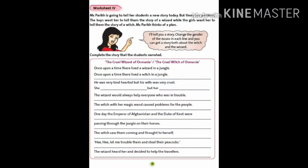Now, worksheet number 4, page 15. Miss Parik is going to tell her students a new story today. But there is a problem. The boys want her to tell them the story of a wizard, while the girls want her to tell them the story of a witch. Miss Parik thinks of a plan. Now, Miss Parik will tell you a story. Change the gender of the nouns in each line, and you can get a story both about the witch and the wizard.